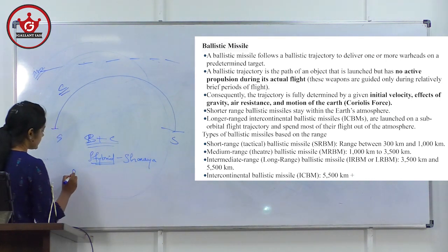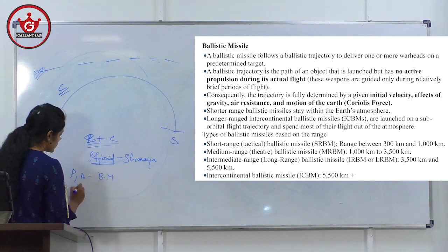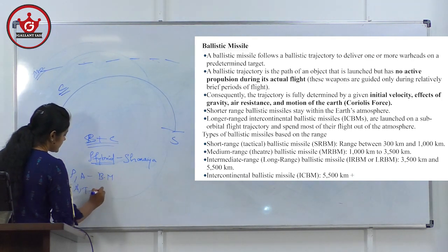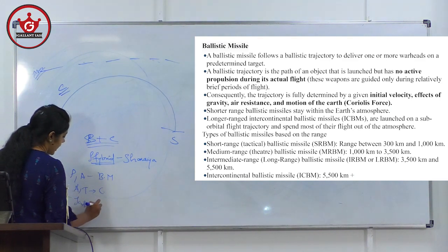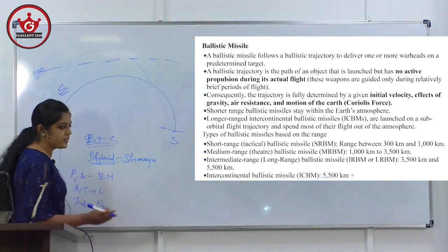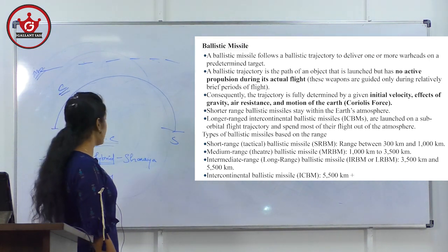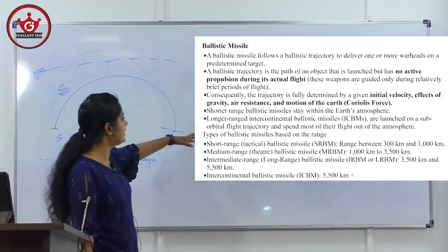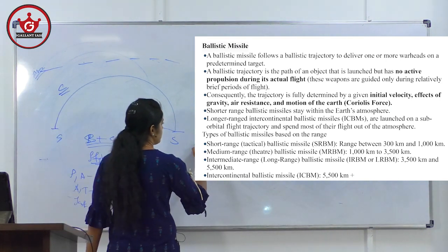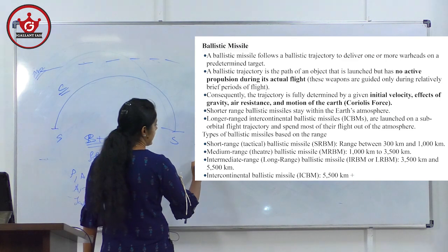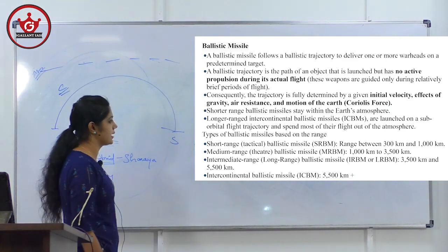In the PATNA series: Prithvi and Agni are ballistic missiles. Akash and Trishul are cruise missiles. Nag is the anti-tank missile — it moves in the shape of a serpent, which is why the name Nag. The classification of ballistic missiles by range: short-range ballistic missile, medium-range ballistic missile, intermediate-range ballistic missile, and intercontinental ballistic missile (ICBM).